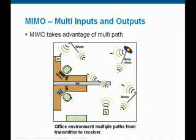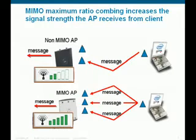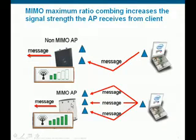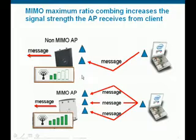Let's look specifically at the technology in the AP-1250 to do this. On the receive side, the AP-1240 can only receive one copy of that signal and decipher it at a time. Compare that to the AP-1250 with its MIMO support — it has multiple antennas receiving multiple copies of that transmission, combining them to create a much stronger signal. The concept being used is called maximum ratio combining, where the combined signal strength is much stronger than any one antenna hears.